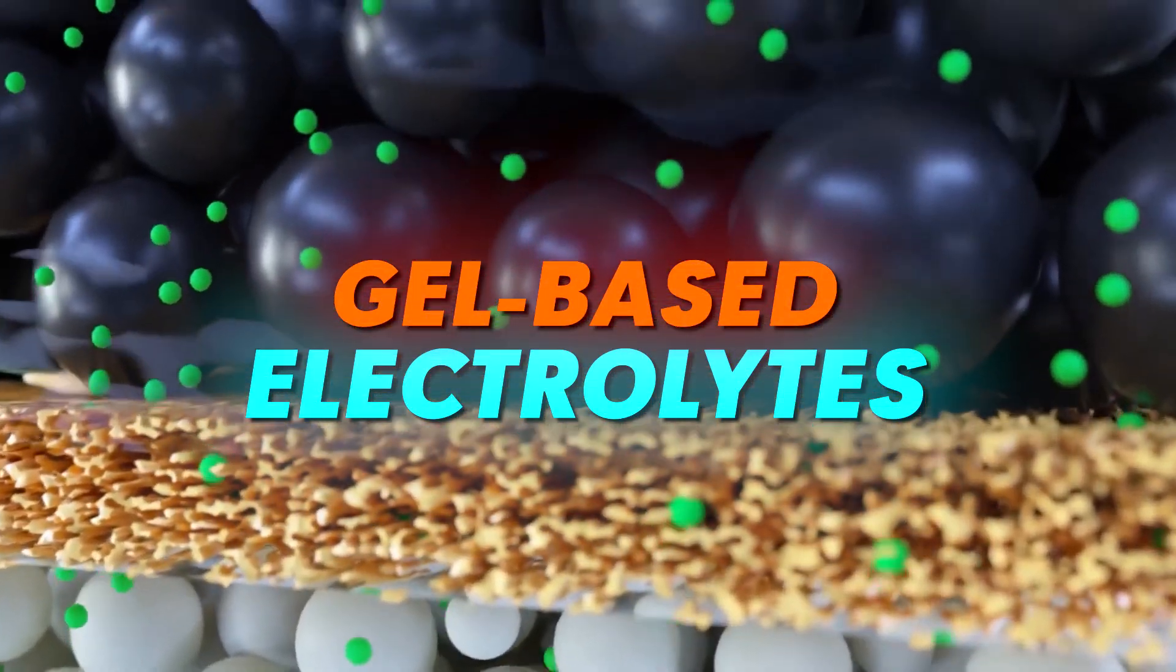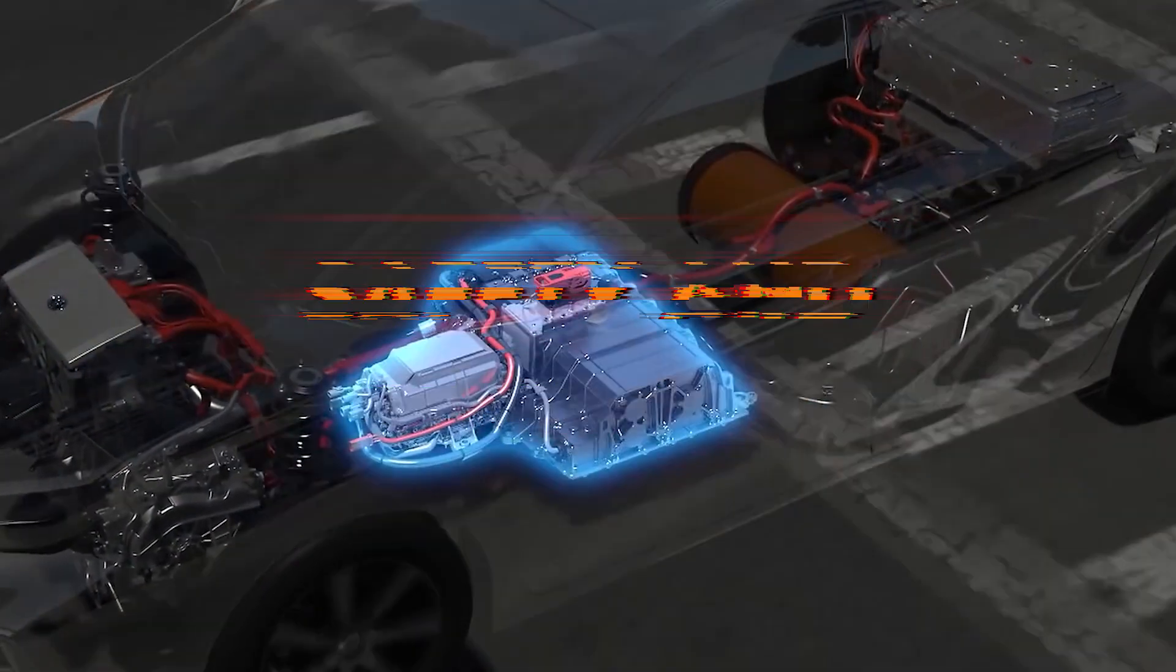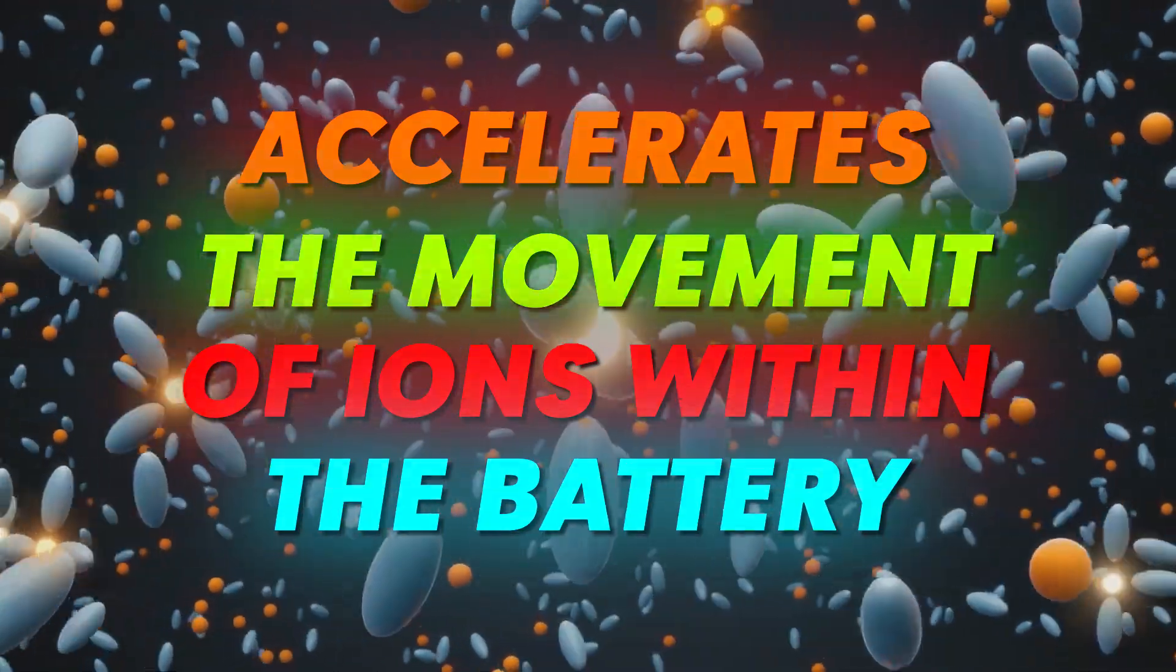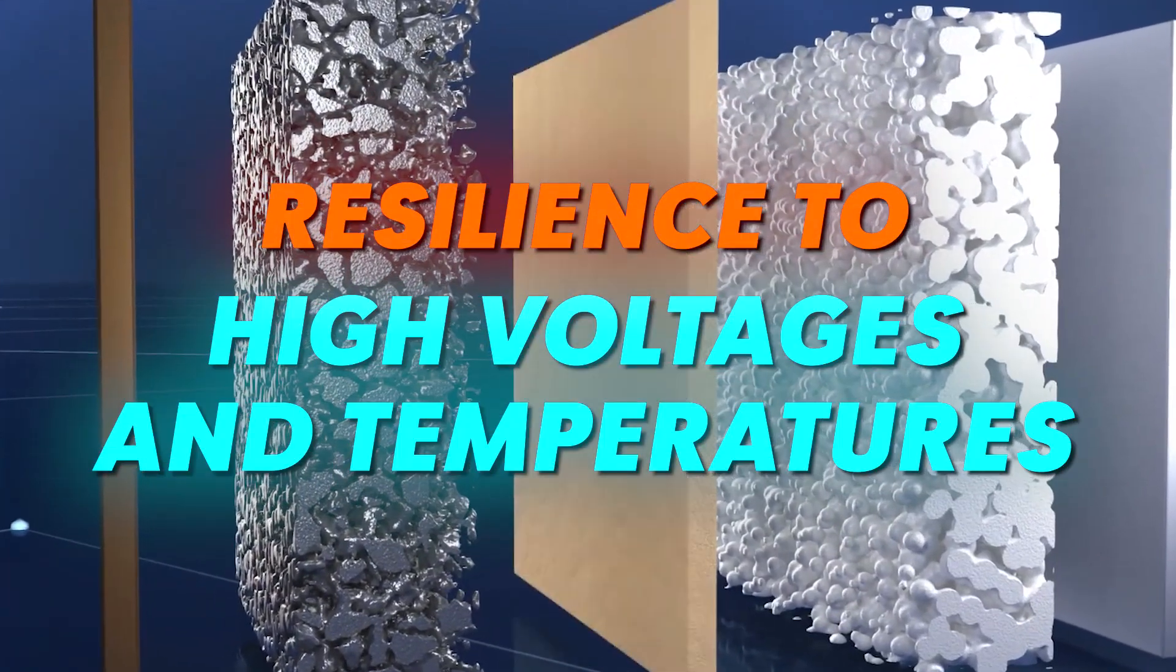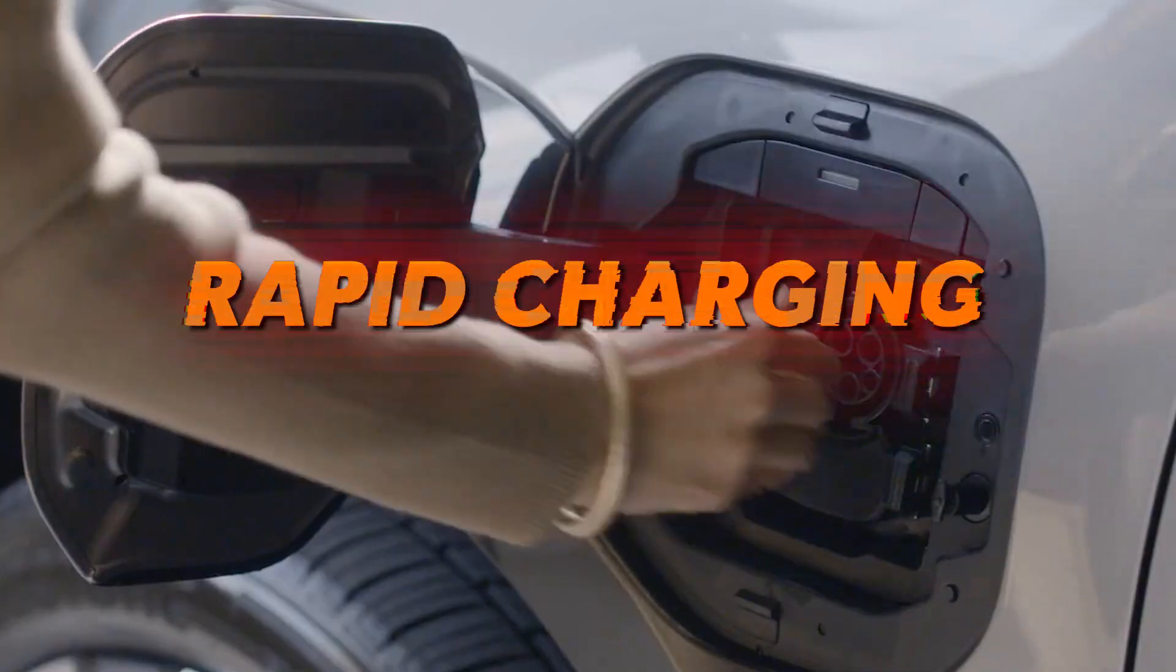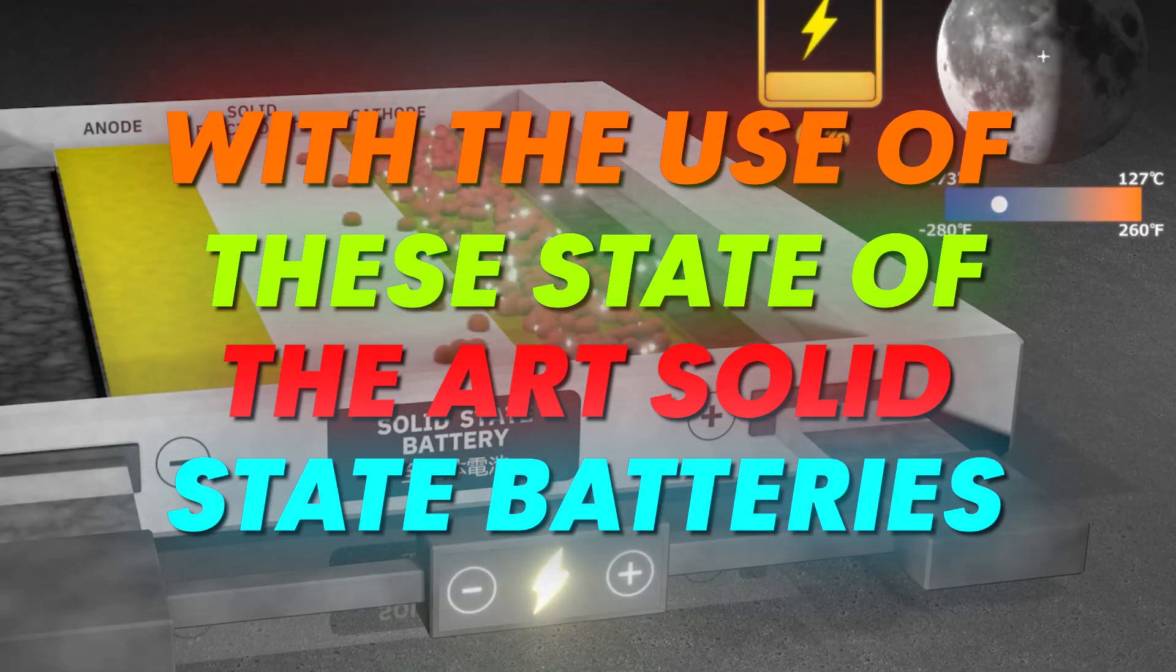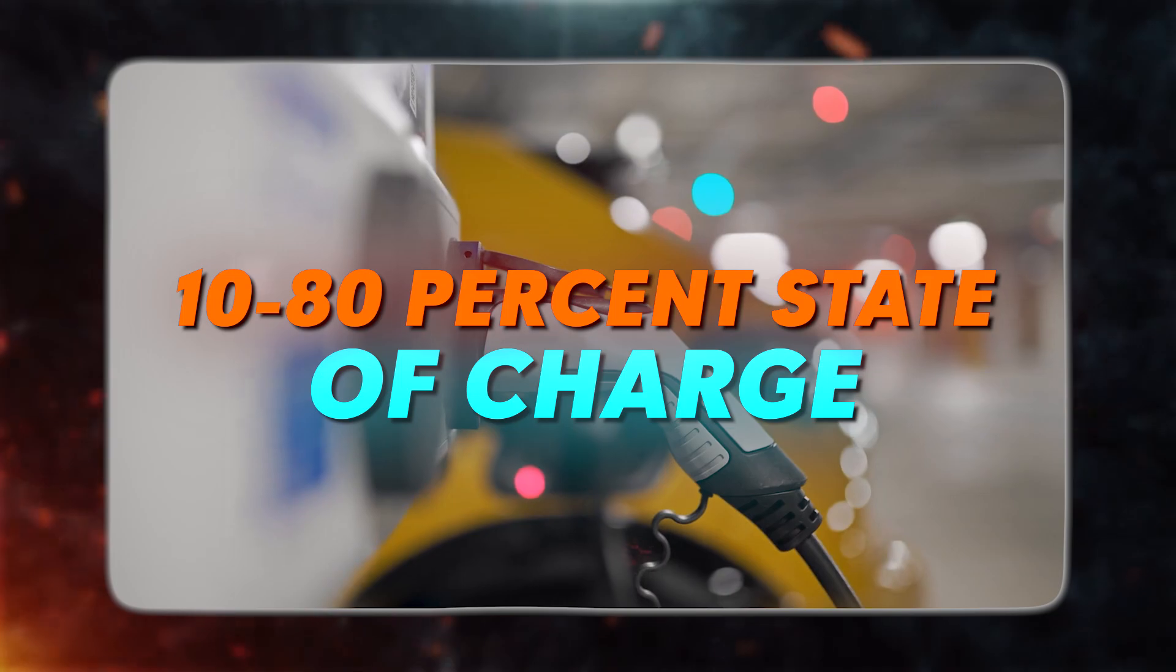Traditionally, gel-based electrolytes have been celebrated for their exceptional safety and stability. But their benefits extend beyond that. The gel-like composition actually accelerates the movement of ions within the battery. Additionally, solid electrolytes exhibit remarkable resilience to high voltages and temperatures. These breakthroughs bring truly thrilling news. Rapid charging is on the horizon. According to Toyota's estimates, with the use of these state-of-the-art solid-state batteries, charging times could be slashed to less than 10 minutes for 10 to 80% state of charge.